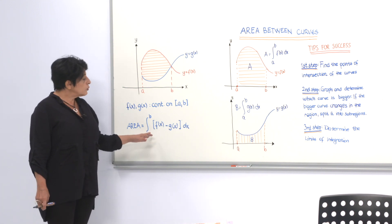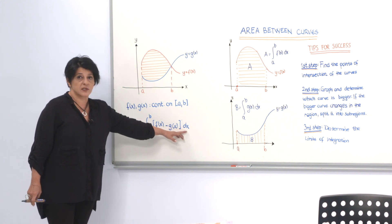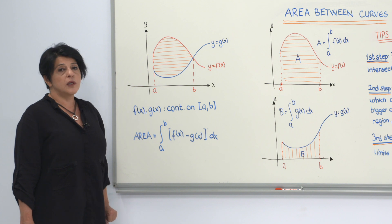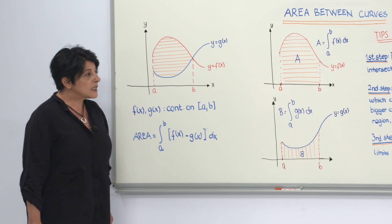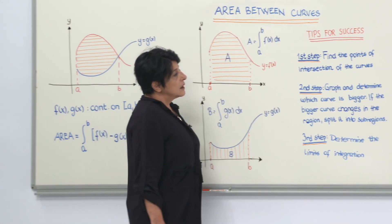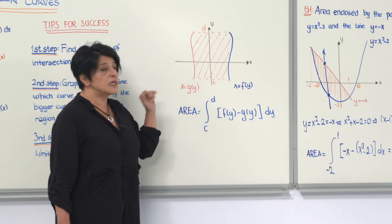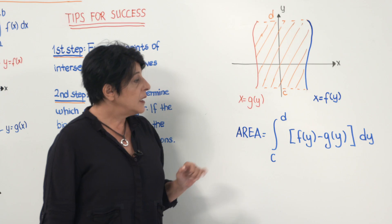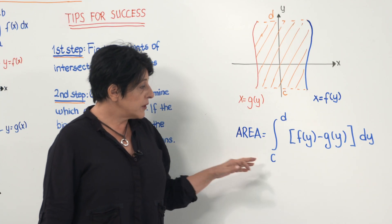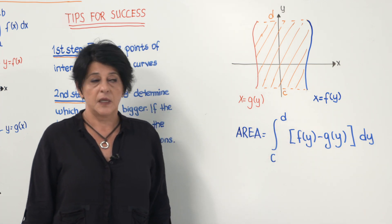So far we have used this formula when calculating the area between two curves by integrating along the x-axis. Now we are going to generalize this and find an equivalent formula for integrating along the y-axis. For two curves x = f(y) and x = g(y), both continuous on the interval [c, d], the area formula is the integral from c to d of [f(y) − g(y)] dy.